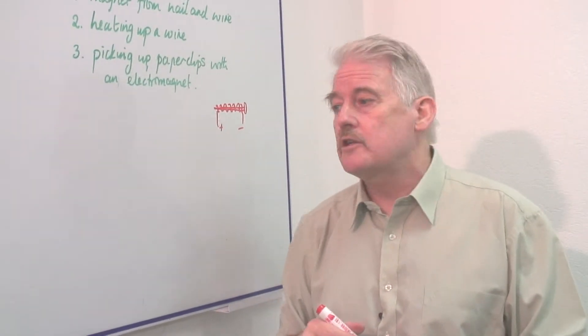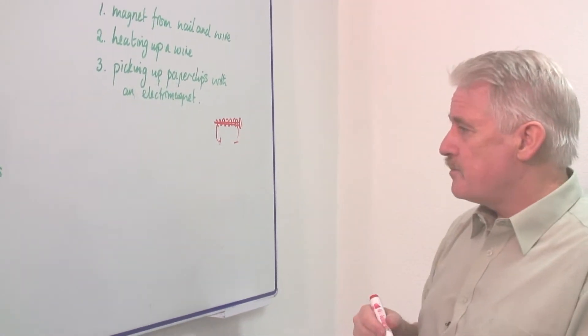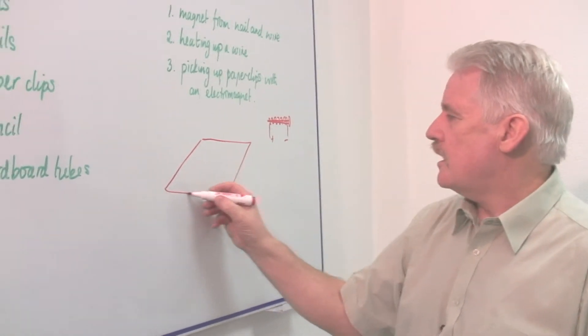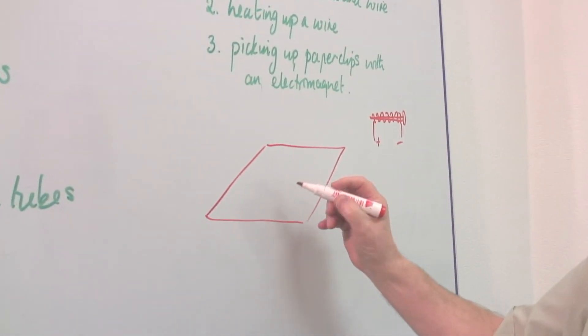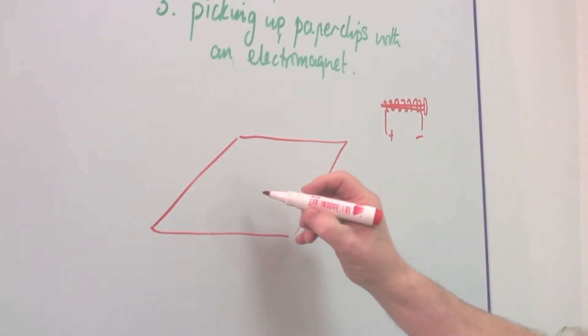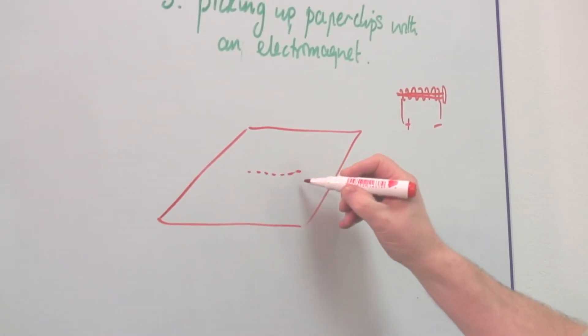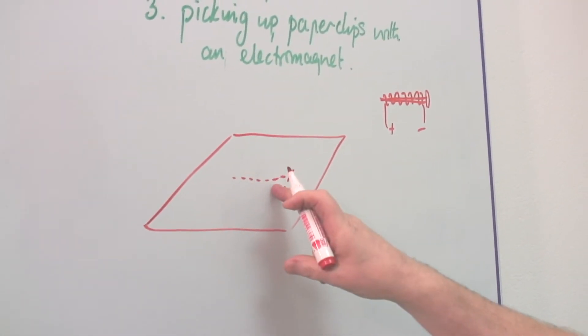But there are other things. If you get a sheet of paper for example, and if you take your magnet with its coil and put it underneath, put it underneath here. So here is your magnet and it's working.